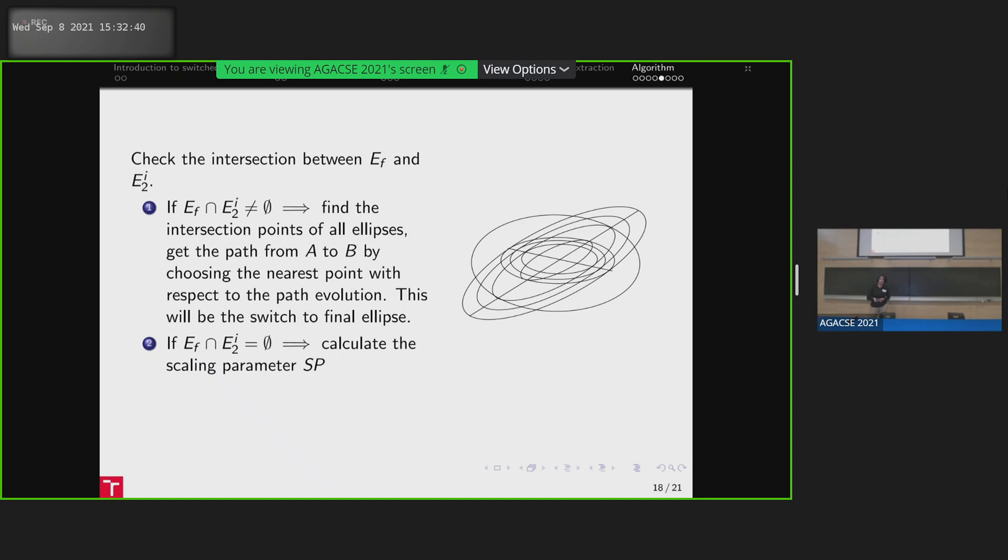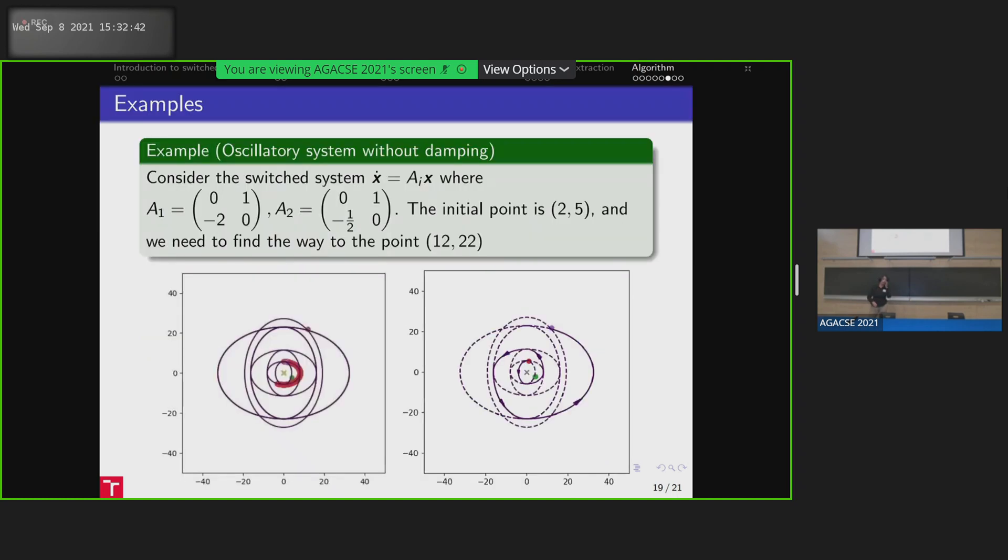So, we can consider it on a small example. So we, for example, start from a system without damping. We want to get from the point, which is 2.5, to the point 12.22. But we can use only the trajectory of ellipses. So what we do, we start, we get what kind of family of ellipses is it.